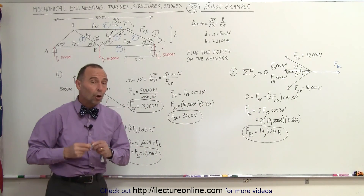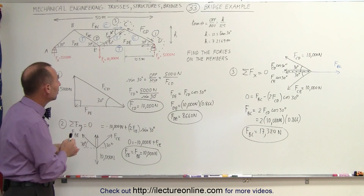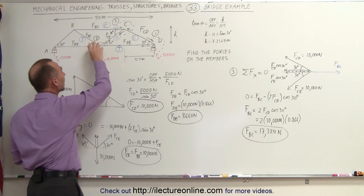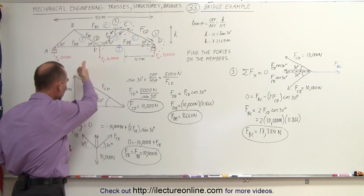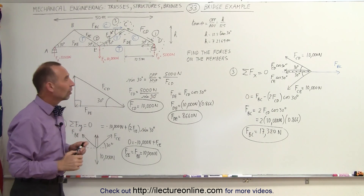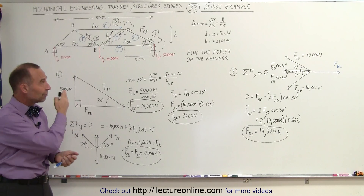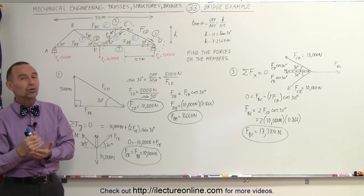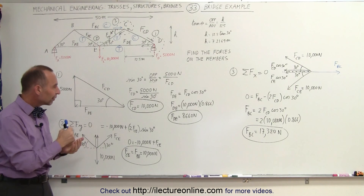That allowed us to find all the forces on all the members and determine which are under compression and which are under tension. That's how we do it — simply by looking at each joint and summing forces in the x or y direction, or by drawing a triangle relating forces to the physical dimensions of the bridge. On the next video, we'll do the exact same bridge structure using the method of sections to find the forces on individual members.